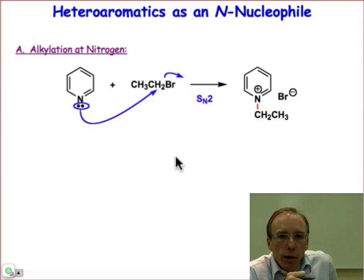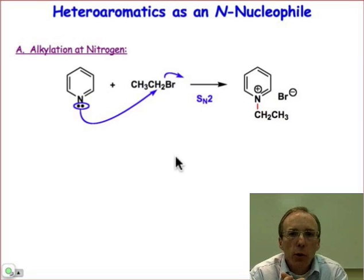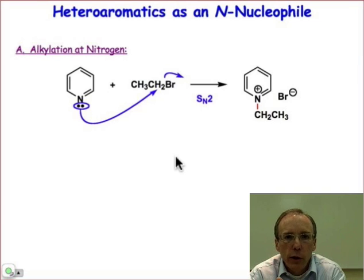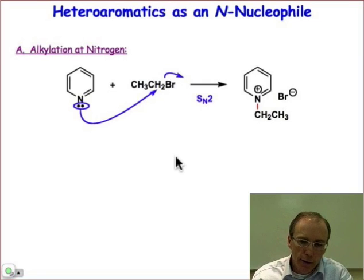When it comes to the lone pair acting as a nucleophile, we can pretty much ignore heteroaromatics that contain sulfur and oxygen. Those lone pairs are usually tied up in the aromatic ring, or they're really not very nucleophilic to begin with. And so we're really only going to need to focus on heteroaromatics that contain nitrogen.